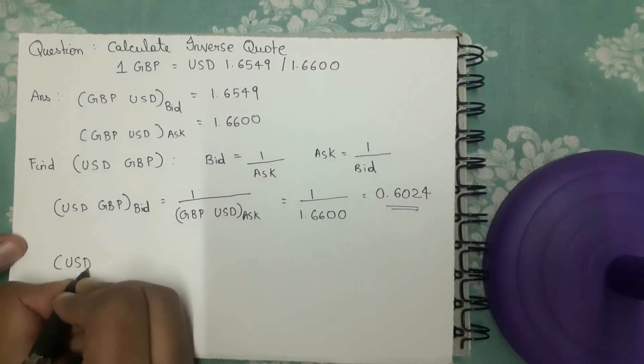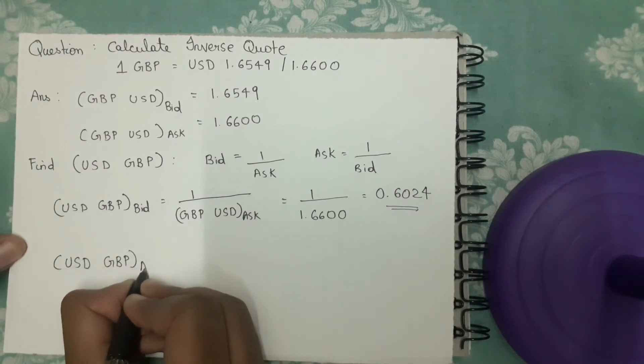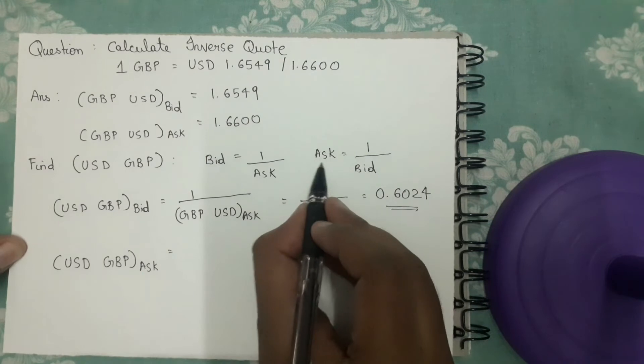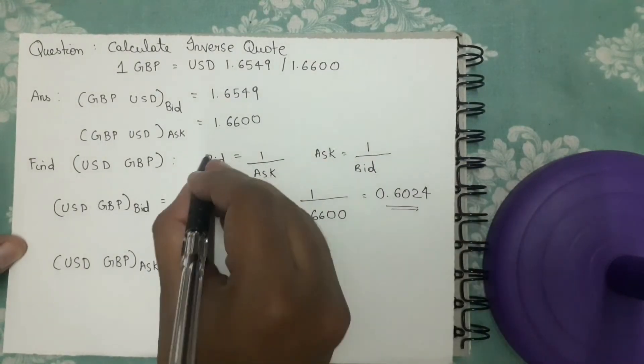Now we have to find USD/GBP ask rate, which would be equal to - ask rate is 1 by bid rate, this is the formula.